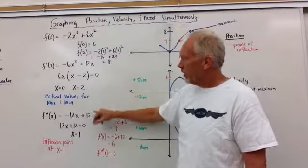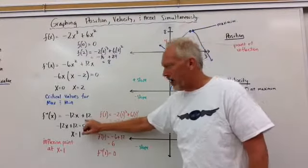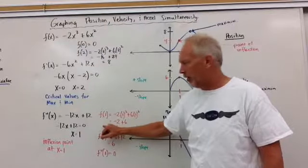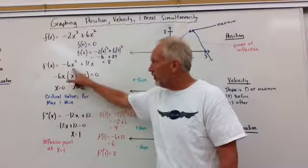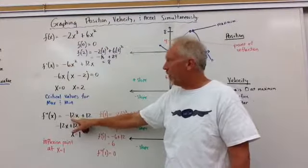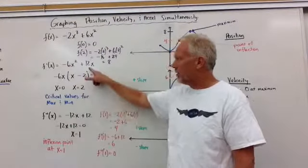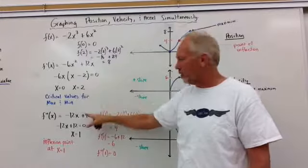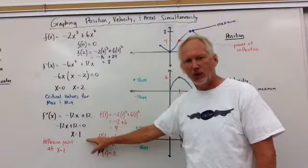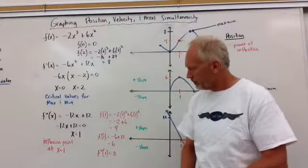Then we can find, we set f double prime of x equal to 0, which we take the derivative of the first derivative. So bring the 2 down, that's negative 12x plus derivative of 12x is equal to just 12. We set that equal to 0, and we get x is equal to 1.